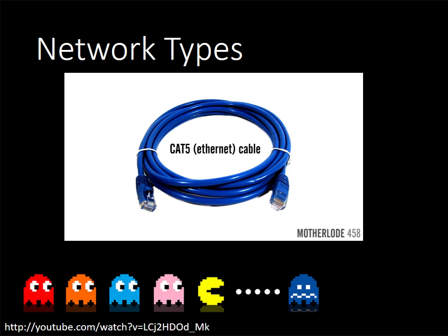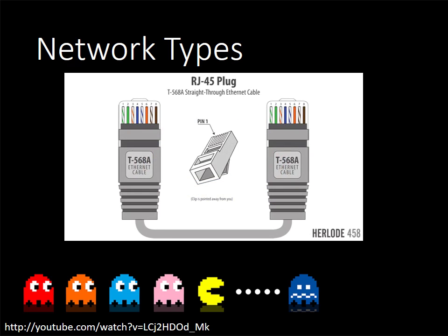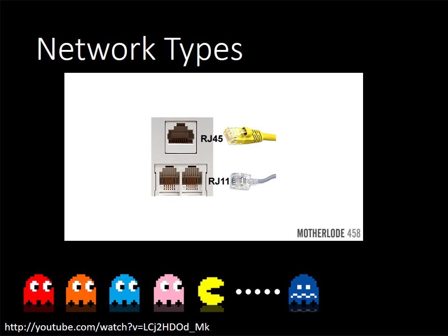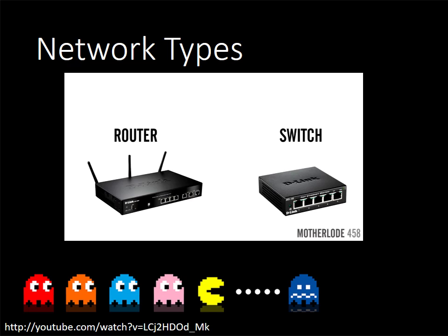Ethernet is a technology which allows us to connect multiple devices to form a local area network. To create your own Ethernet LAN you'll need a Cat5 cable — the category 5 cable — which is the main component used for creating Ethernet LANs. At the end of each Ethernet cable there's an RJ45 plug with eight separate wires inside. Ethernet cables have eight wires whereas telephone cables have only four. Two other important devices are a router, which connects two different LANs and exchanges data packets between them, and a switch, which expands the LAN with devices such as PCs, gaming consoles, and smart TVs.